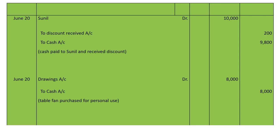June 20: paid 1,900 to Sunil in full settlement of his account. Entry: Sunil account debited 10,000, to Discount Received account 200, to Cash account 9,800. Narration: cash paid to Sunil and discount received.